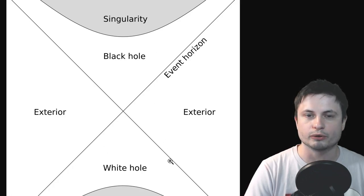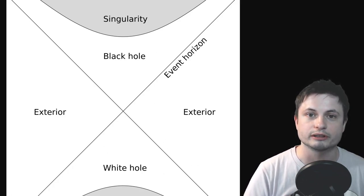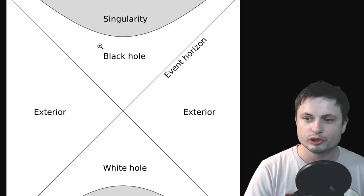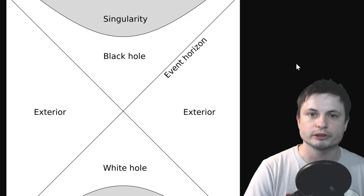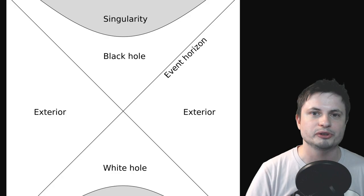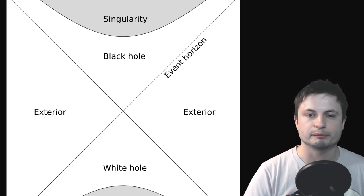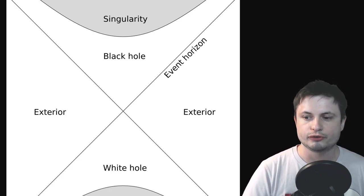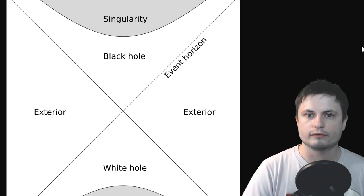But if you go back to Einstein's equation, you'll see that he didn't just predict the black holes - he also predicted white holes. As a matter of fact, his equation clearly states that the existence of a black hole suggests an existence of a white hole with its own singularity and its own, I guess you could call it white horizon.